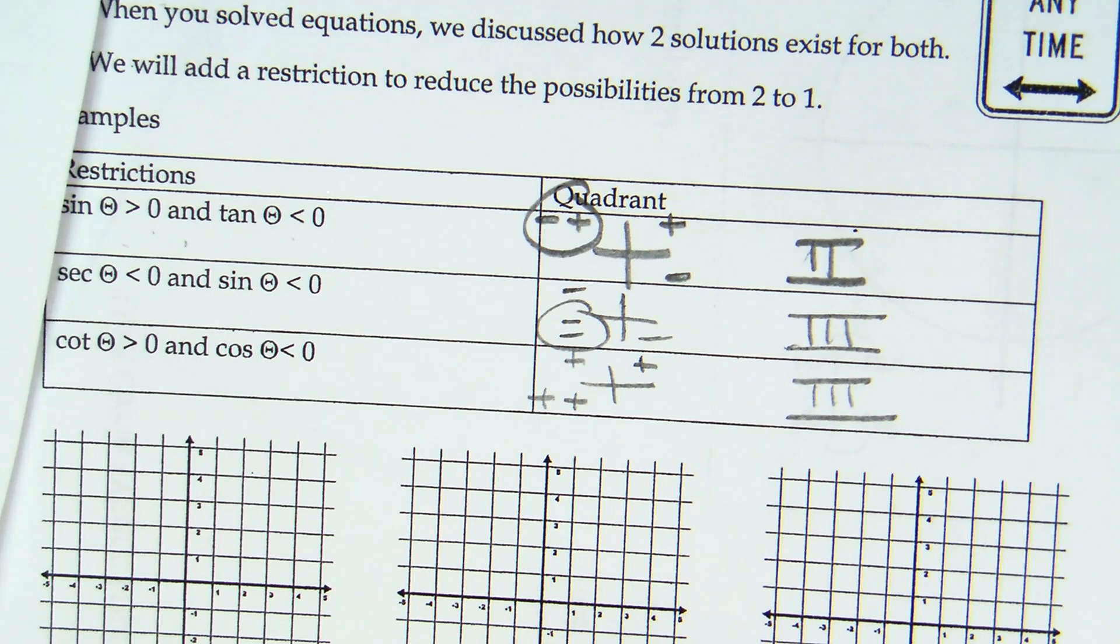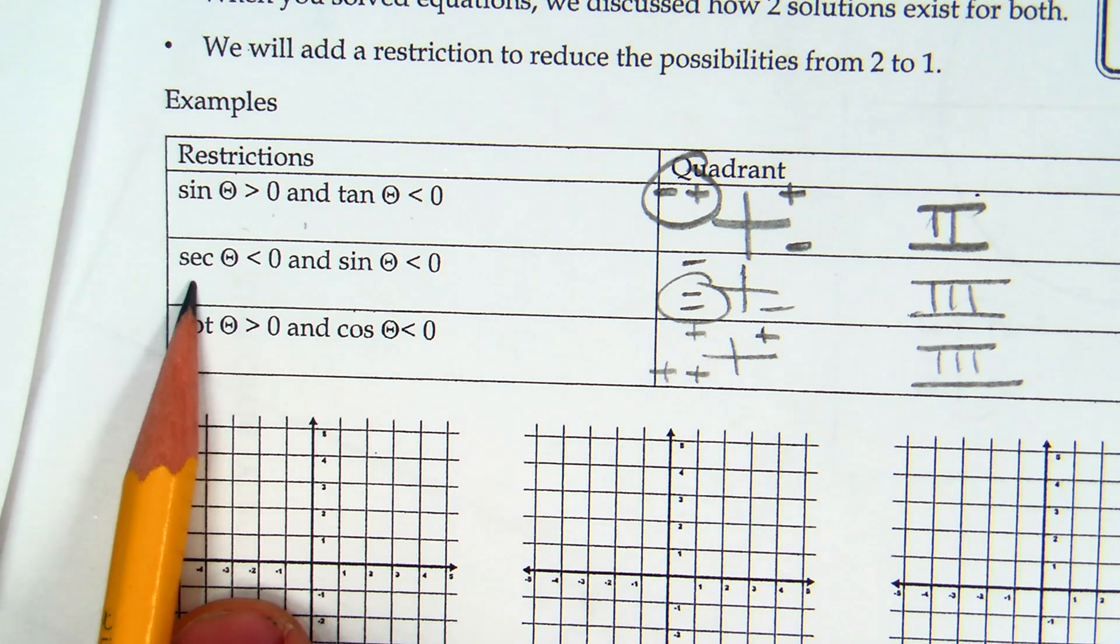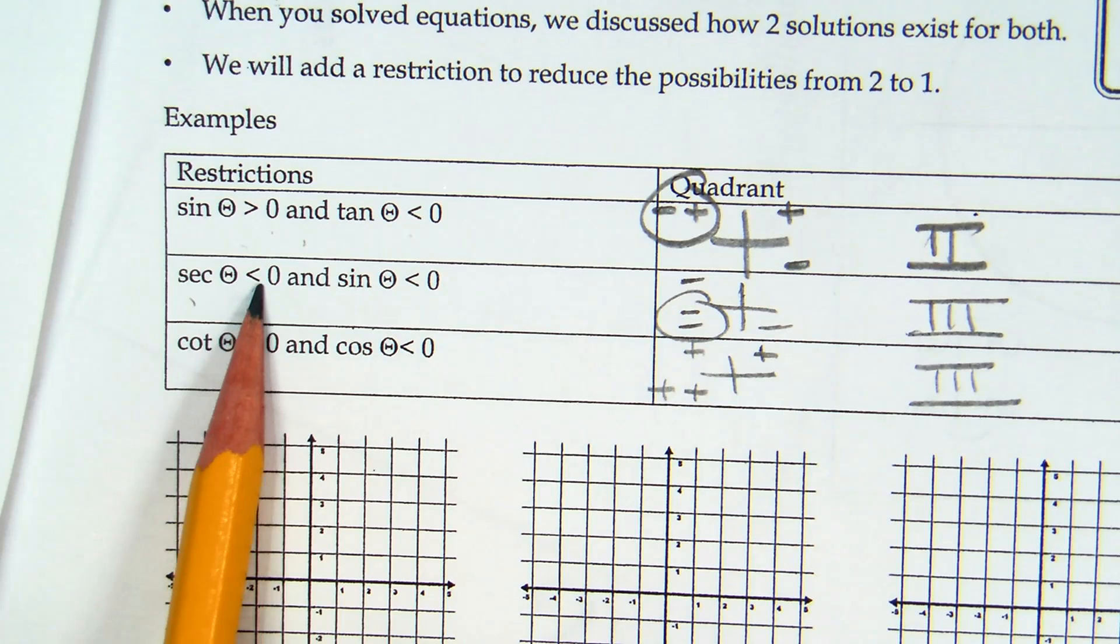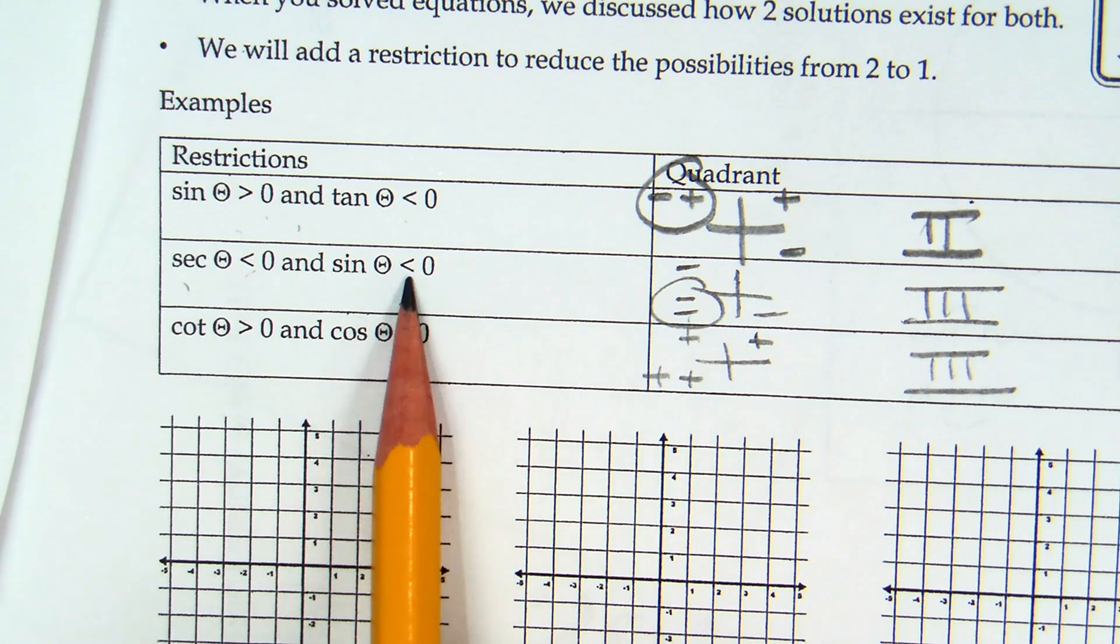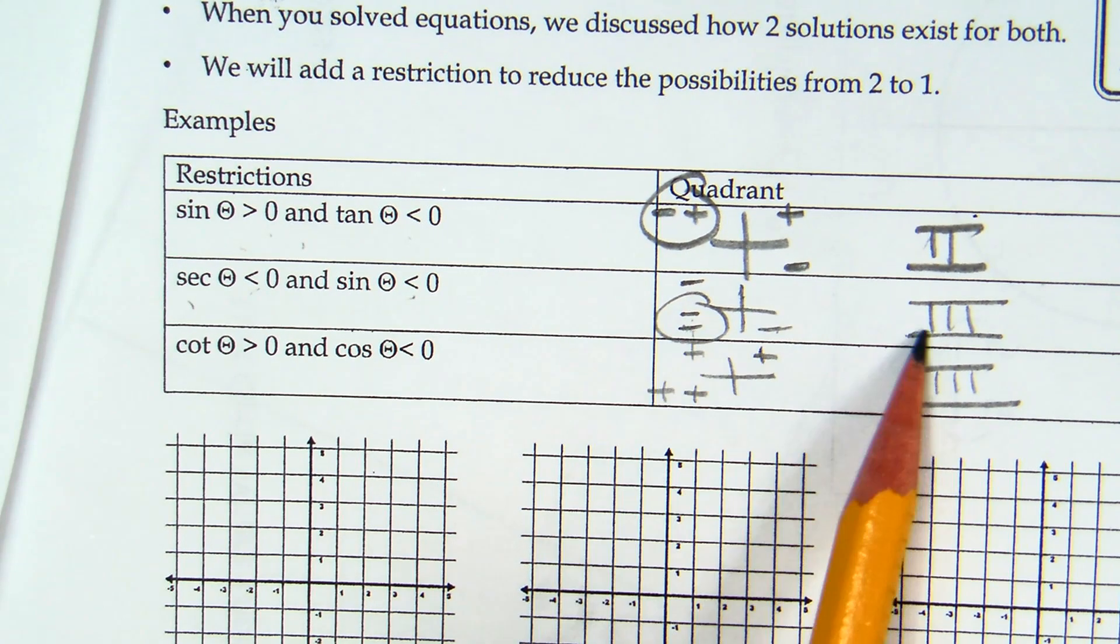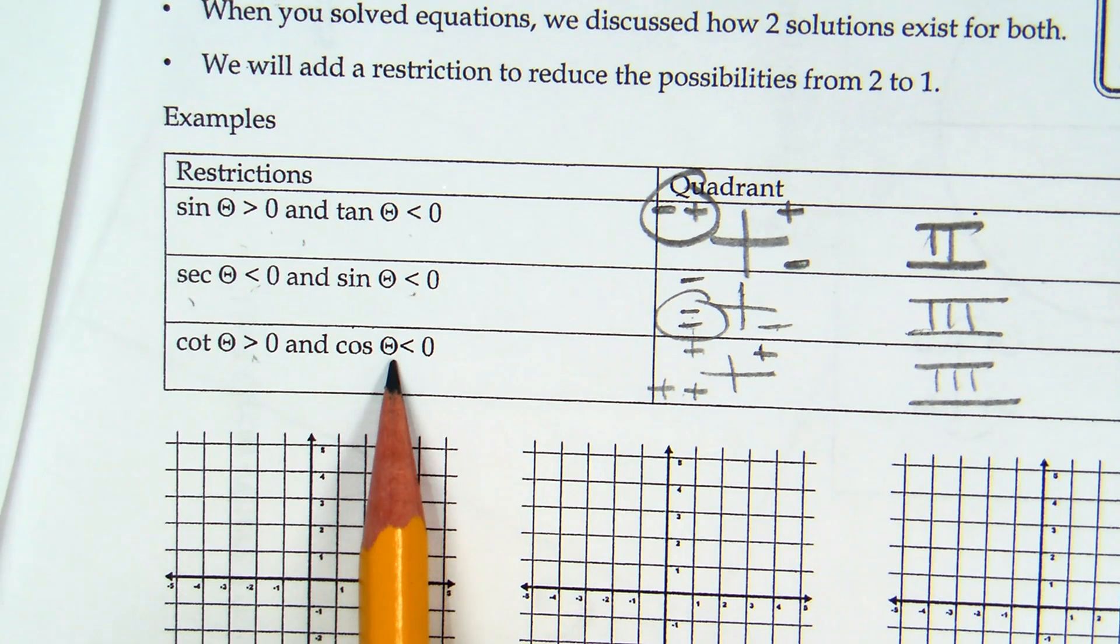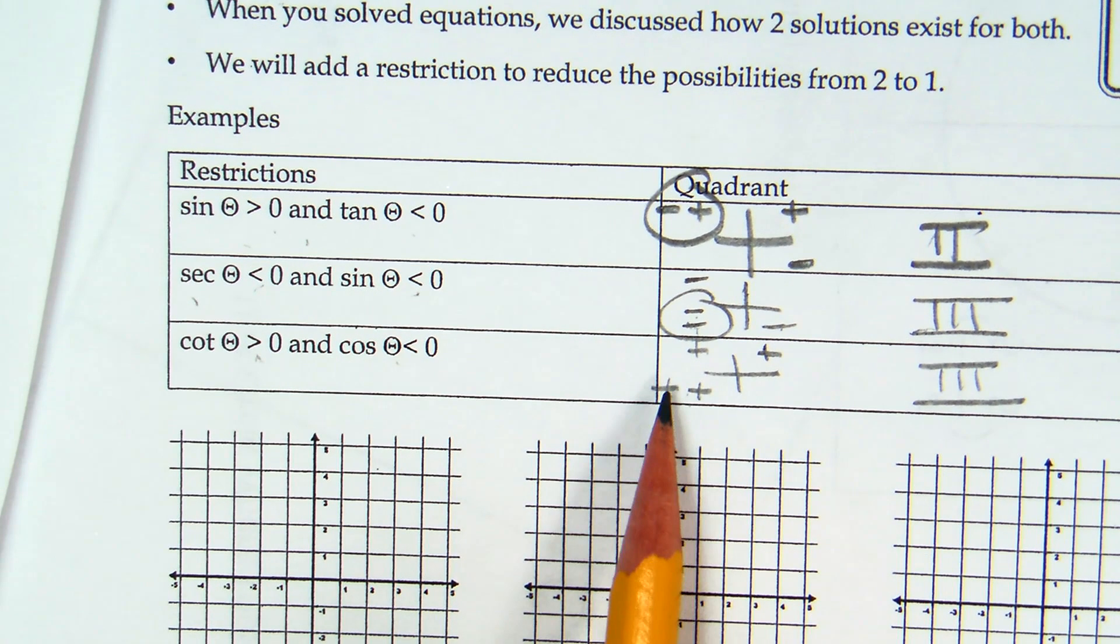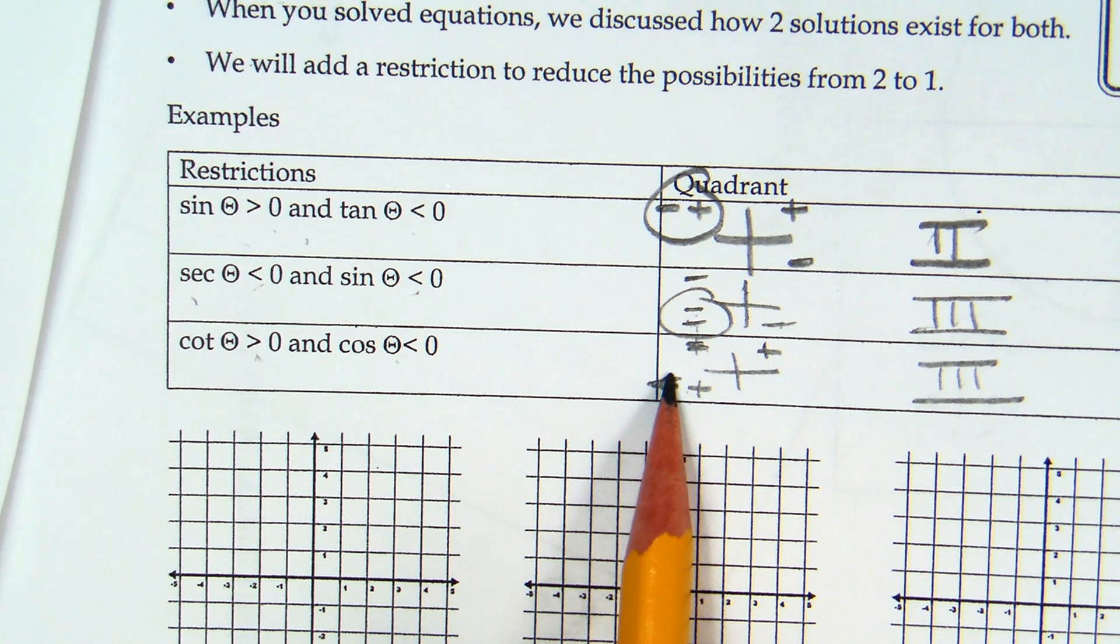Both are going to be in the third quadrant. So I heard some people talking about it. Secant is related to cosine, so cosine is negative in the second and third quadrant. Sine is negative in the third and fourth, so the third quadrant covers both. Cotangent is positive in the first and third. Cosine is negative in the second and third, so that covers both of those.